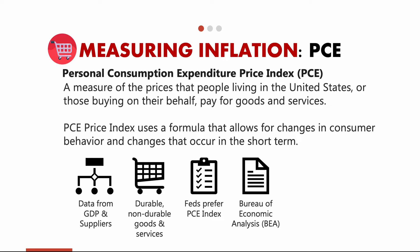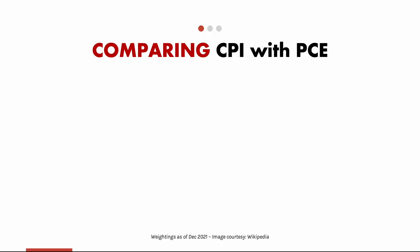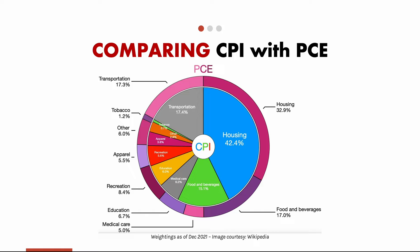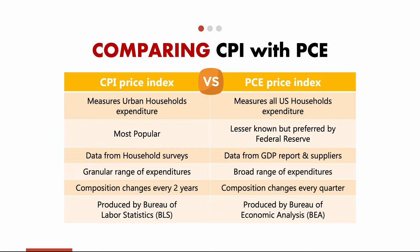Comparing PCE and CPI composition, PCE's top three groups are housing, food and beverages, and transportation — similar to CPI — but PCE has a smaller weightage for housing compared to CPI. In a side-by-side comparison: CPI looks at urban household expenses while PCE looks at US household expenses. CPI is the most popular, but PCE is preferred by the Federal Reserve. CPI data comes from household surveys, while PCE uses GDP reports and supplier data. A major difference is that CPI composition changes every two years, whereas PCE composition changes every quarter. CPI is produced by the Bureau of Labor Statistics, and PCE by the Bureau of Economic Analysis.